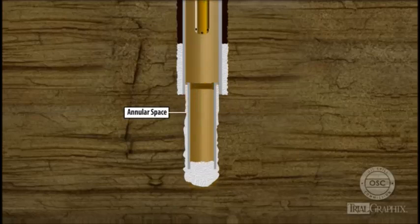In this example, the cement fills the entire annular space around the casing string.